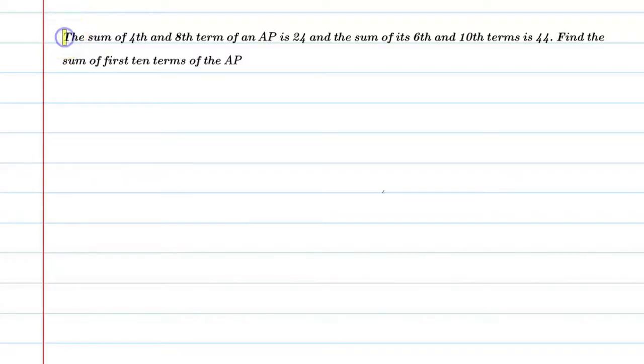Hello students, let's solve this question. The sum of 4th and 8th term of an AP is 24 and the sum of 6th term and 10th term is 44. Find the sum of first 10 terms of the given AP.